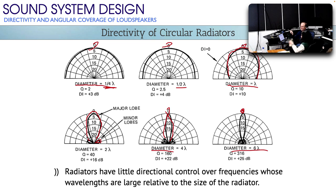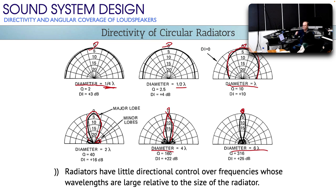If you wanted to design a loudspeaker with consistent directivity across a wide frequency spectrum, you could not do that with a single driver — every frequency would have a different directivity. But if you introduce multiple drivers and subdivide the frequency spectrum so that each driver only reproduces frequencies whose wavelengths are similar in size to that driver, then collectively they can produce the entire frequency spectrum with consistent directivity. That's the biggest reason why we use multiple drivers per loudspeaker.